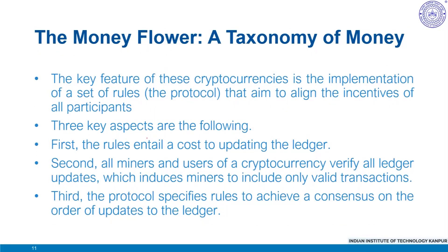Underlying this setup, the key feature of cryptocurrencies is the implementation of a set of rules that aim to align the incentives of all participants so as to create a reliable payment technology without a centralized trusted agent. The protocol determines the supply of these assets in order to counter debasement — for example, in the case of Bitcoin, it states that not more than 21 million Bitcoins can exist.